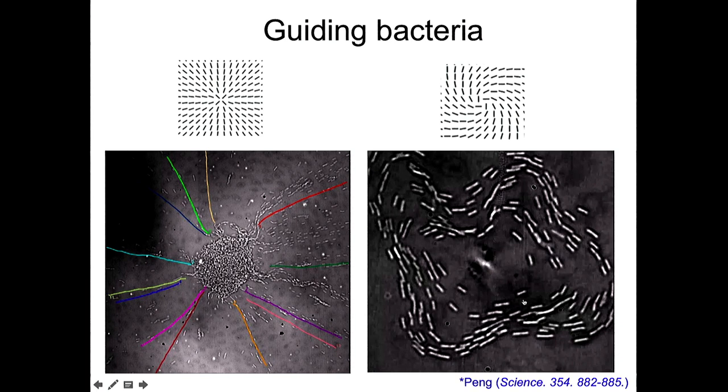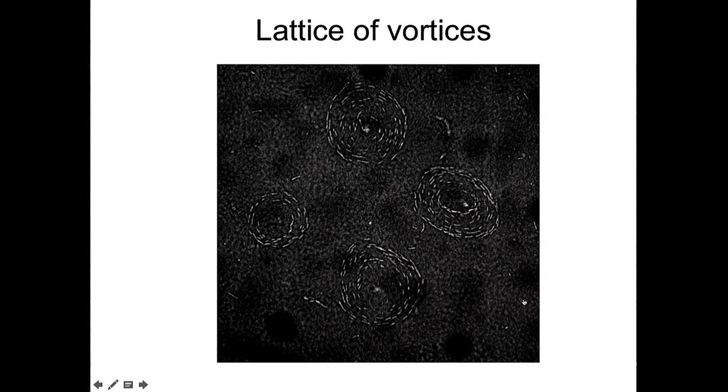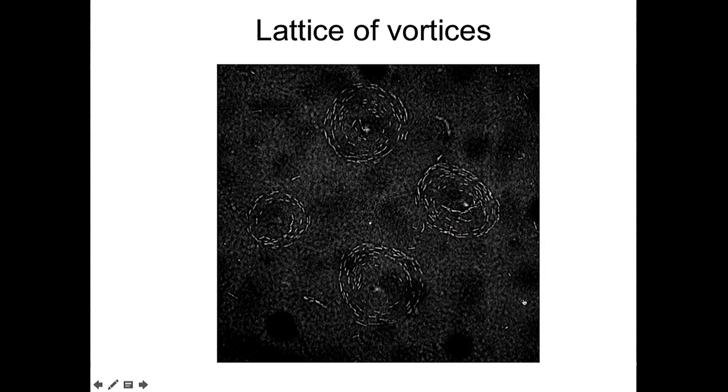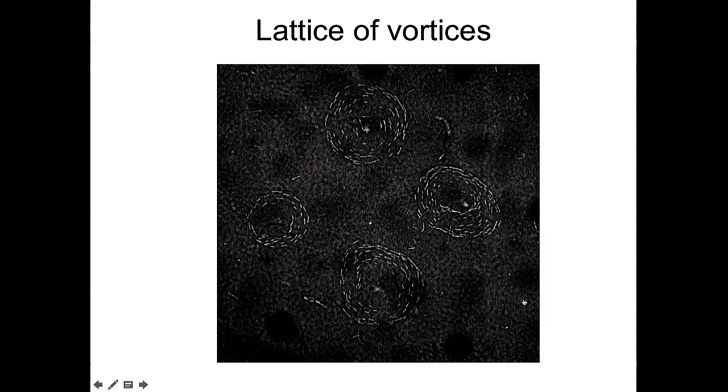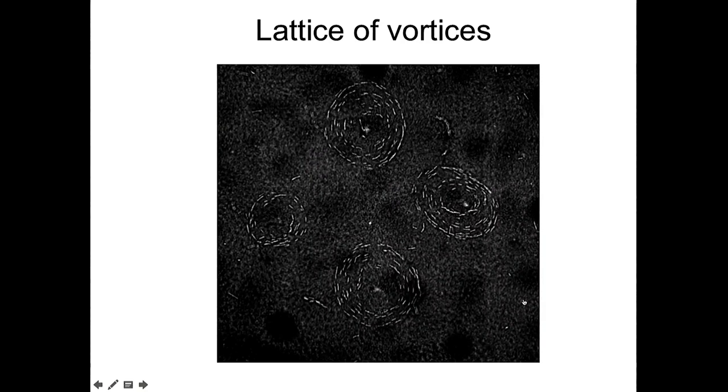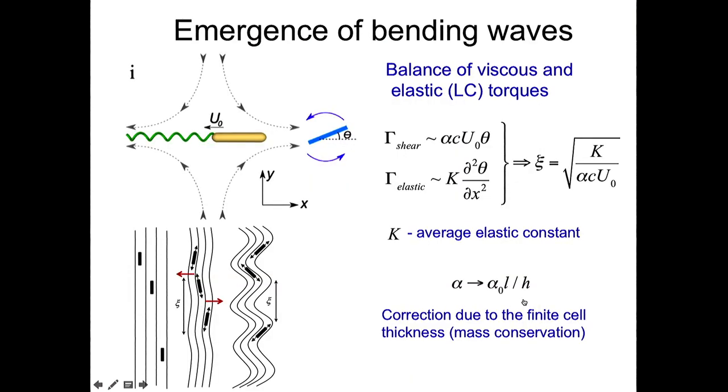The mechanism is the collective interaction between bacteria. So basically, this is the collective behavior. Of course, we can create a system of vortices, interacting vortices or non-interacting vortices. Here you can see basically four different schools of bacteria.